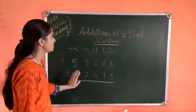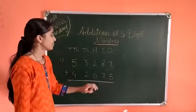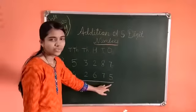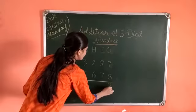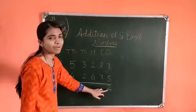So let's add. 7 plus 5 equals 12. But we can't write 12 here. So we will write 2, because 2 is on 1's place.